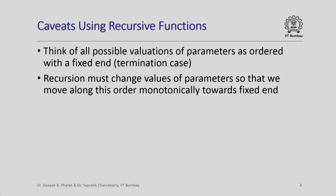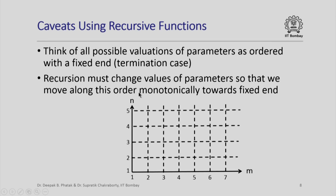In general, when designing a recursive function, you have to think of all possible valuations of the parameters ordered in some manner with a fixed end, and we identify this fixed end with the termination case. When you call this recursive function with specific parameter values, you are at some point along this ordering, and the recursion must change the values of the parameters such that you move monotonically towards the fixed end where recursion terminates. In the context of our example, m and n take values between 1 and 10, and we can represent different combinations as points on a grid.